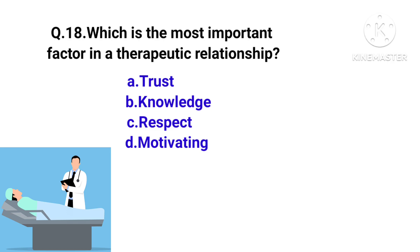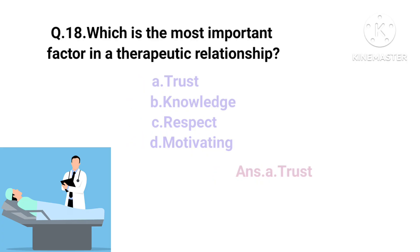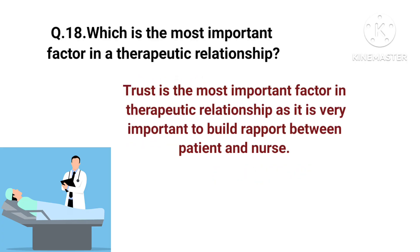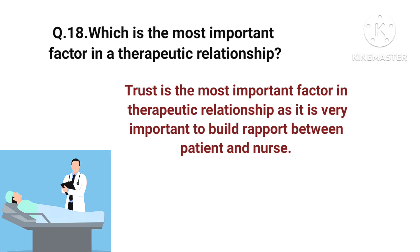Which is the most important factor in a therapeutic relationship? Options: trust, knowledge, respect, or motivating. The right answer is option A — trust. Trust is the most important factor in a therapeutic relationship, as it is very important to build rapport between patient and nurse.